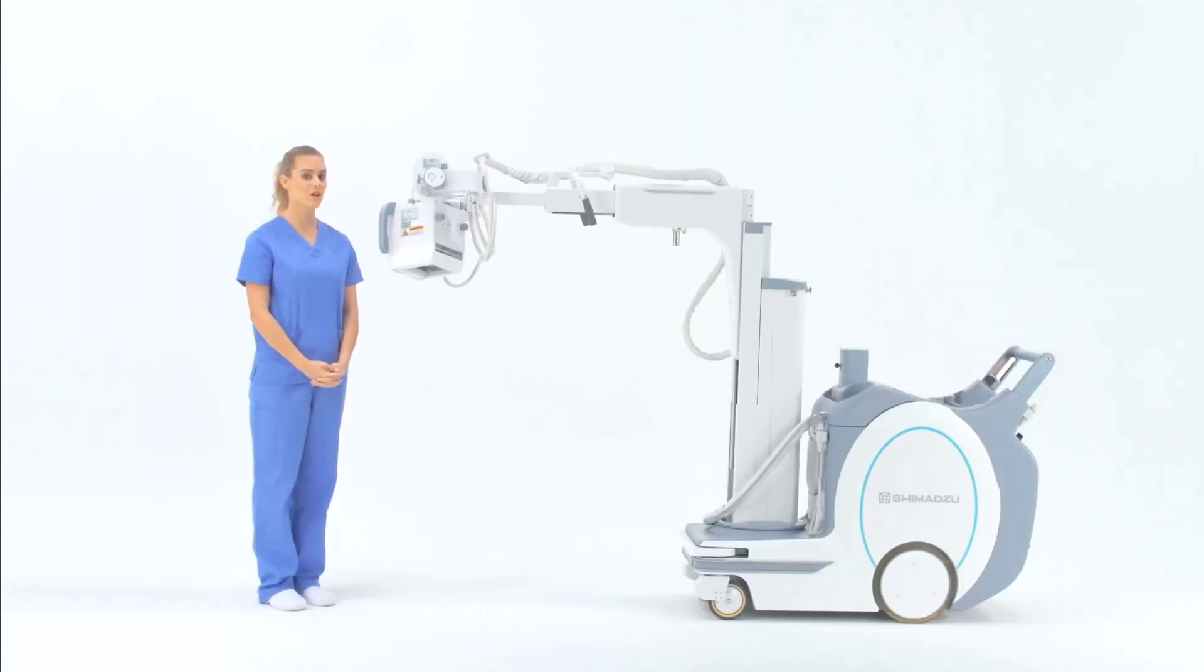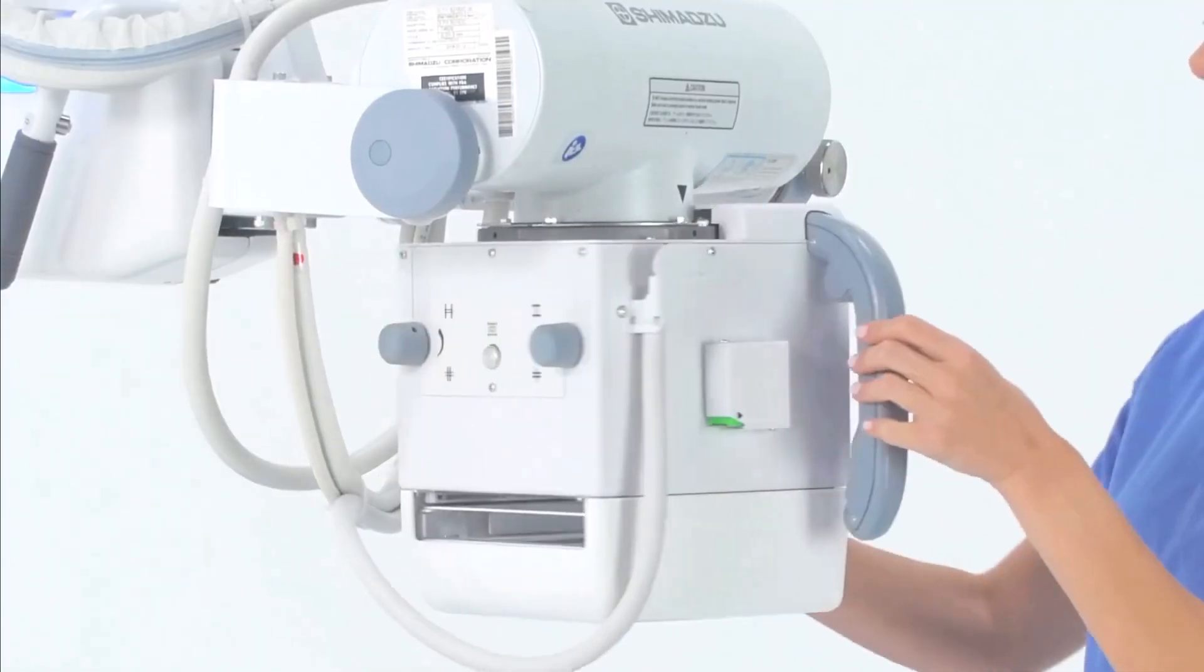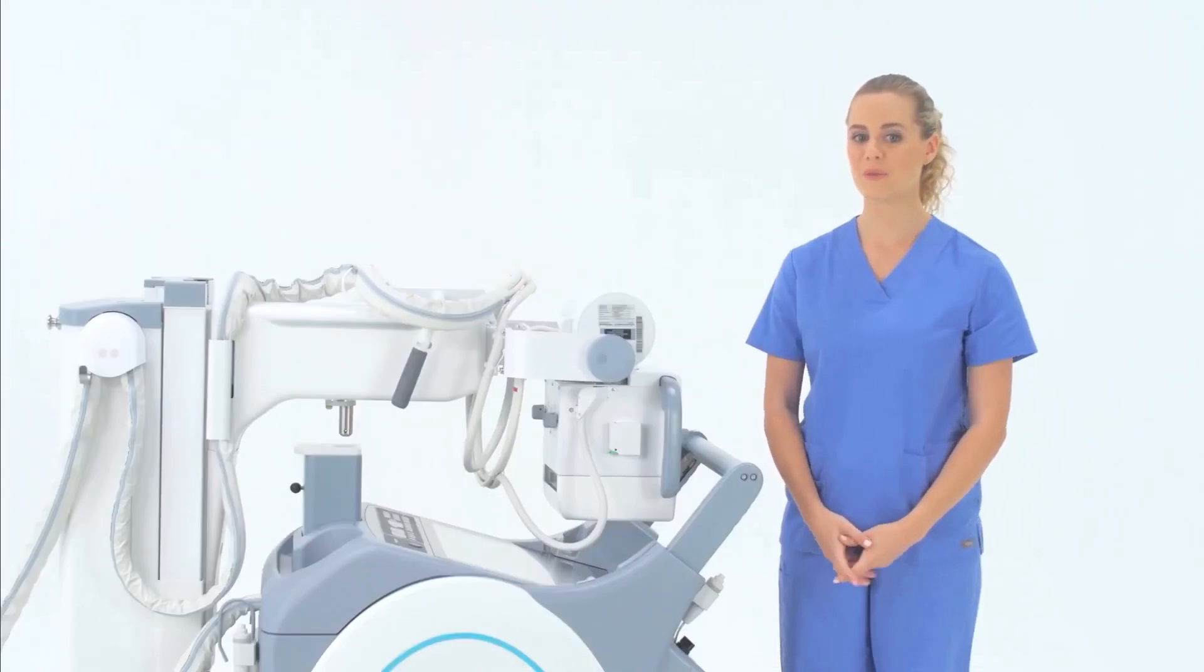If additional rotation of the collimator is required, this knob can be loosened to allow an extra point of articulation. The collimator can be tilted both ways.